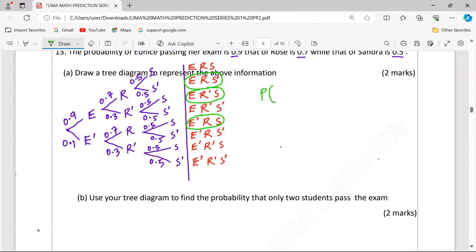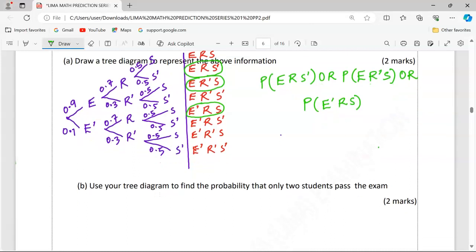That is going to be probability Eunice, Ross, but Sandra fails, or probability Eunice passes, Ross alone fails, with Sandra also passing, or the probability Eunice alone failing, but Ross and Sandra pass. So, these are the probabilities that we are going to compute.